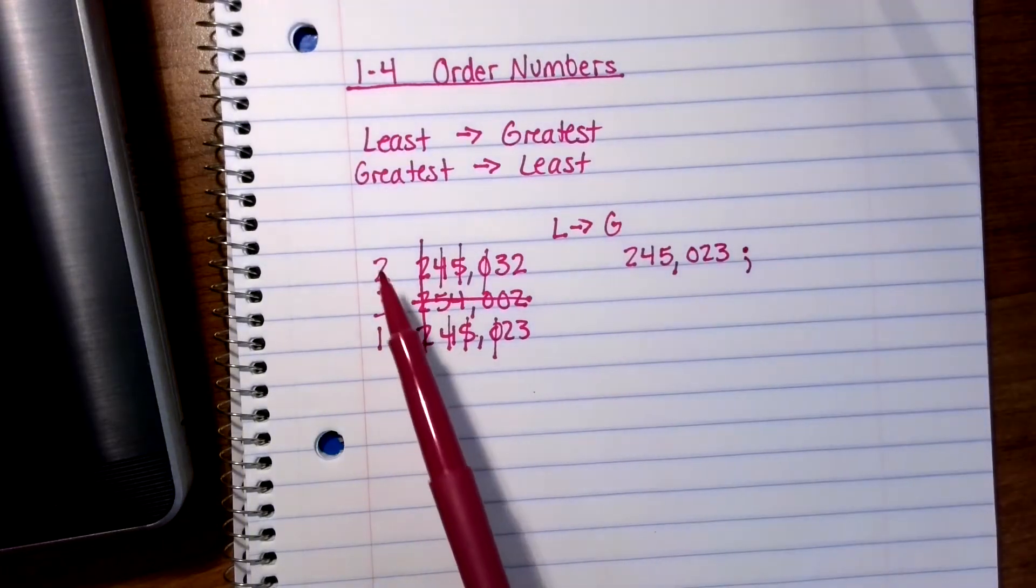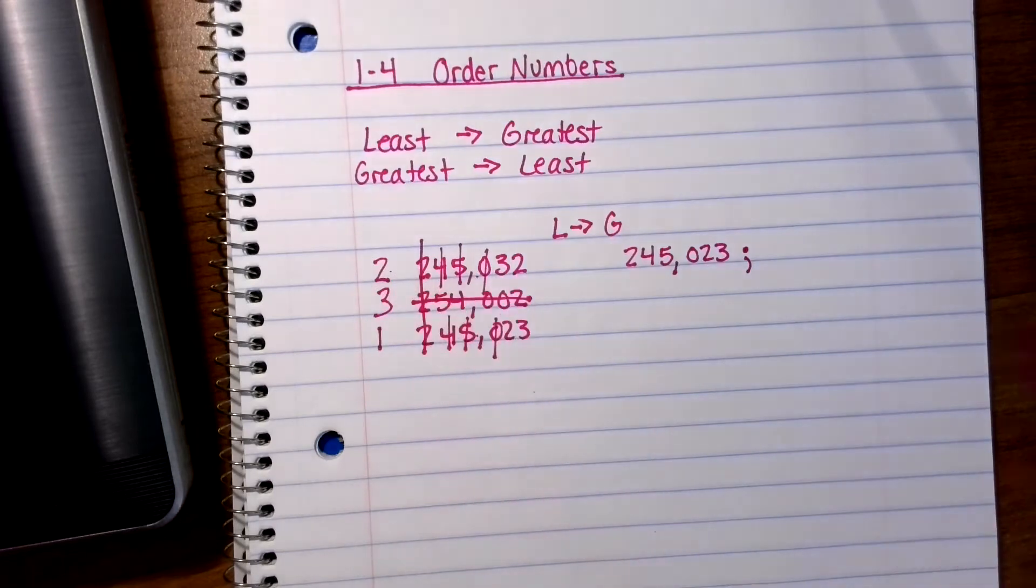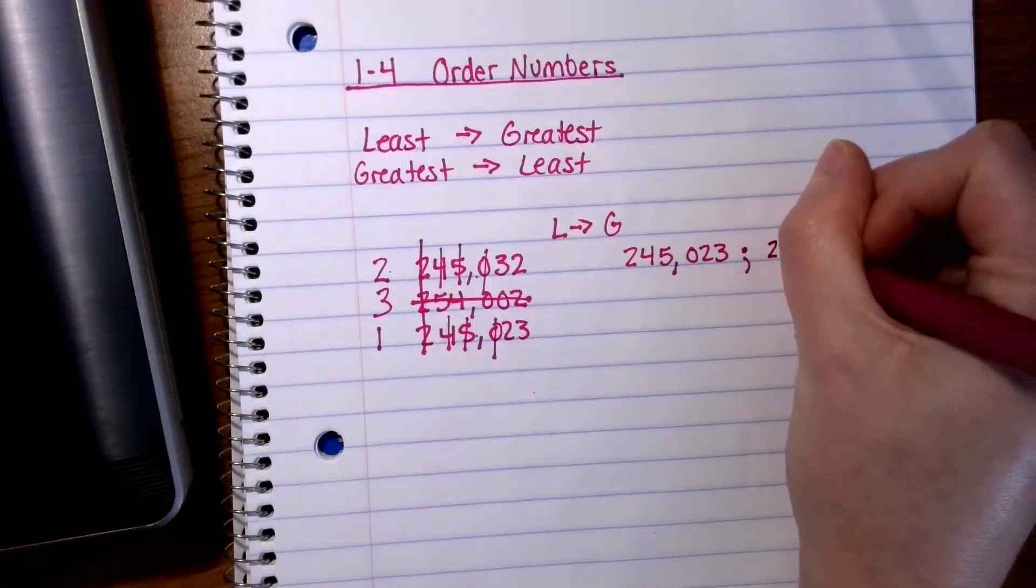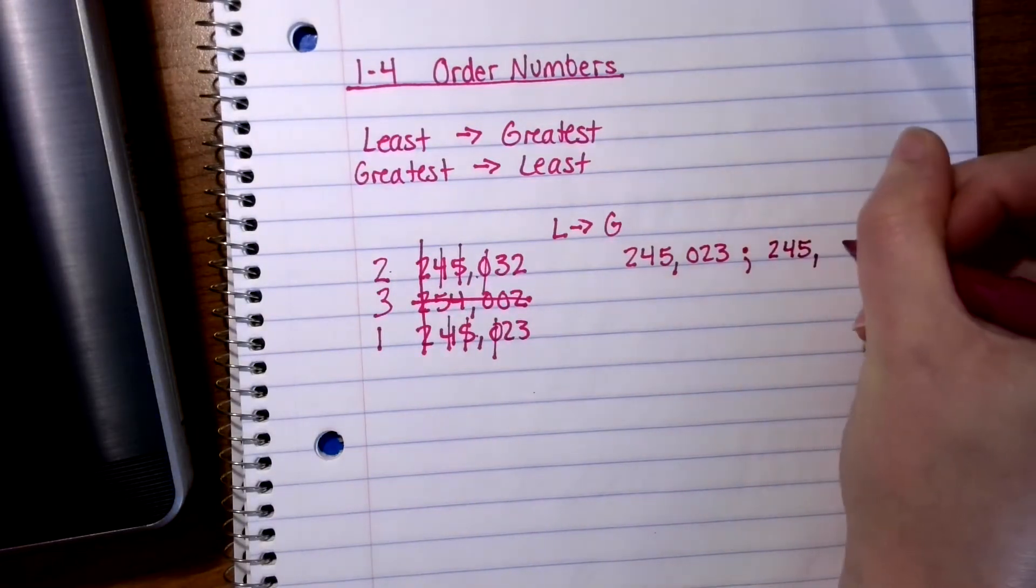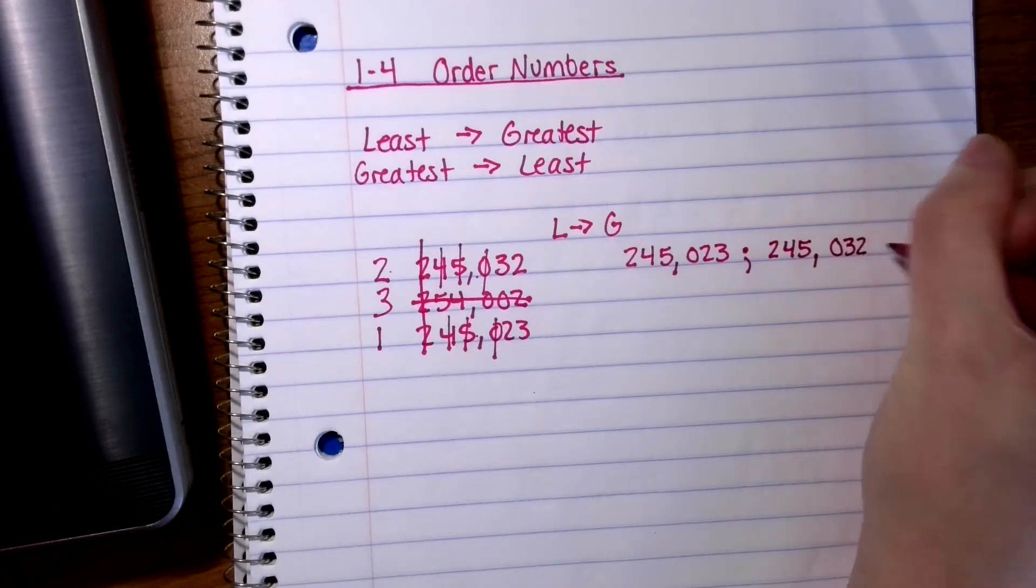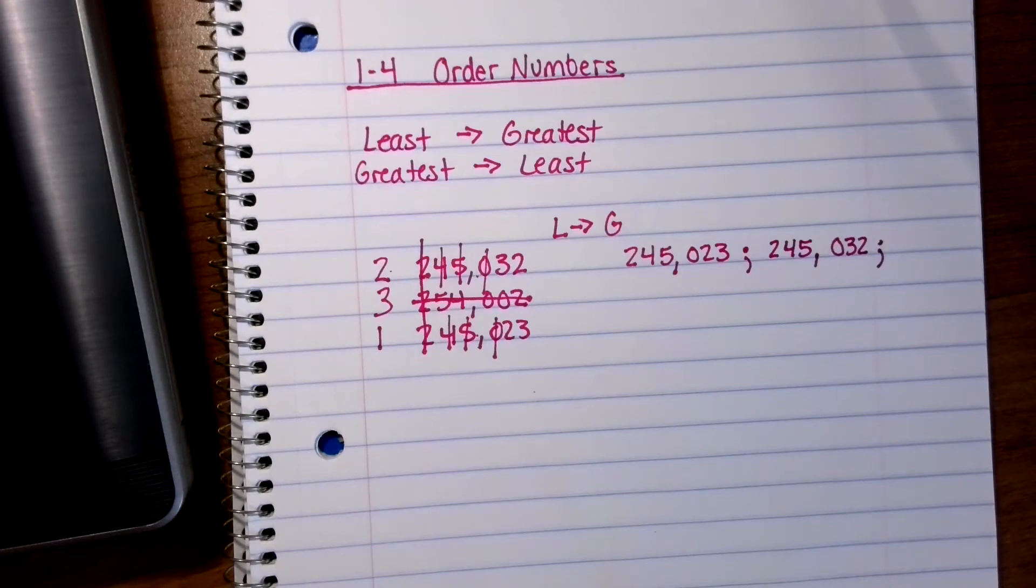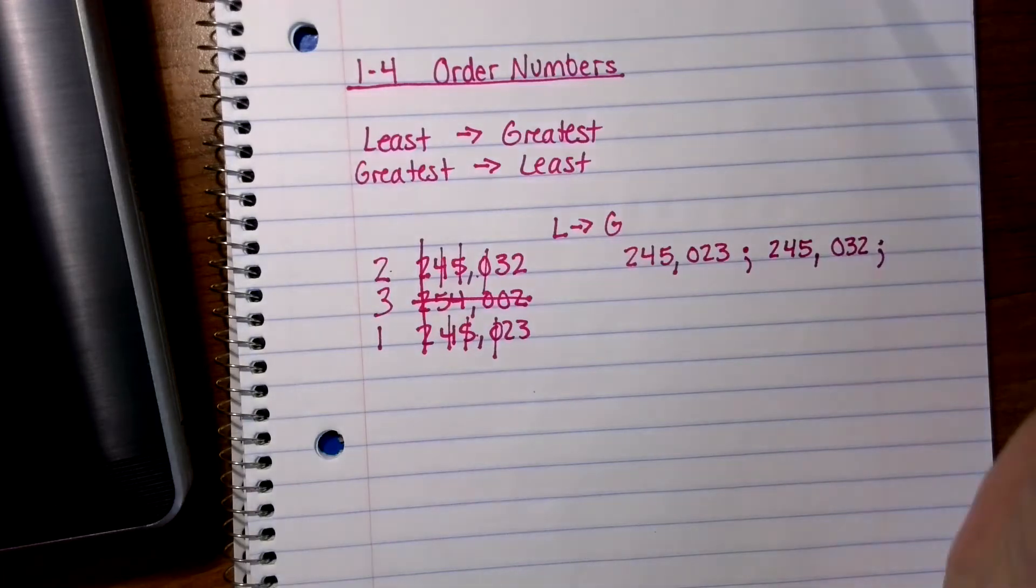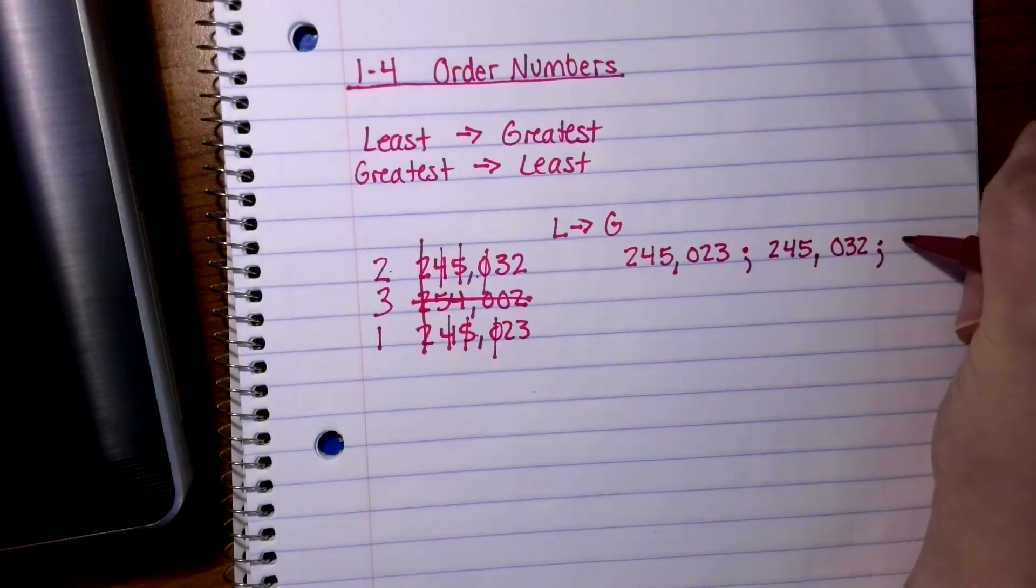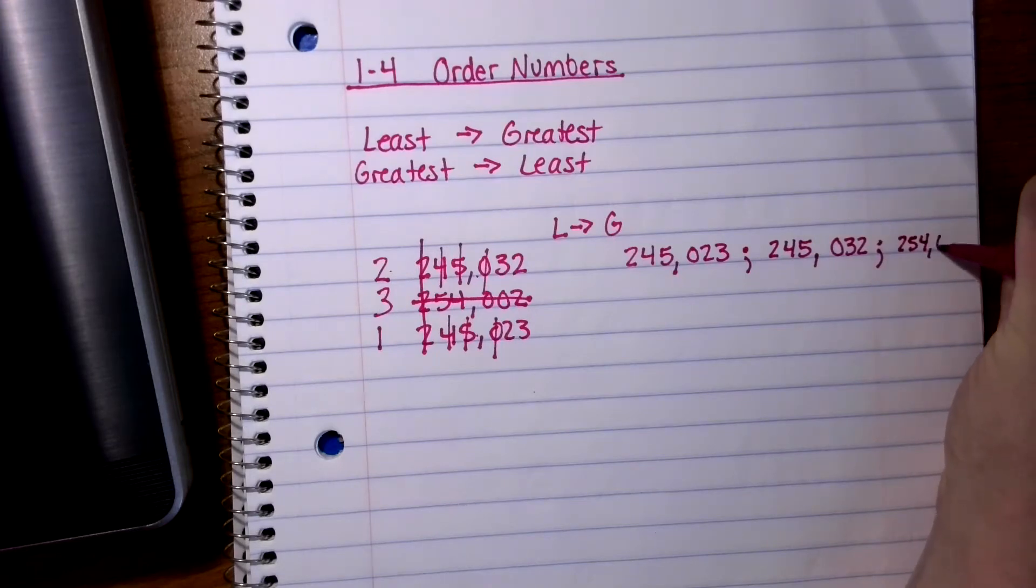Next, this is my second smallest number. So I'm going to list that one next. 245,032. Another semicolon. And finally, I'm going to list the biggest number, which is, hopefully I can fit it over here. Let's write a little bit smaller.